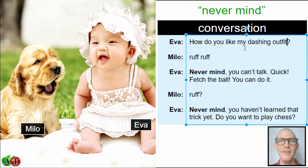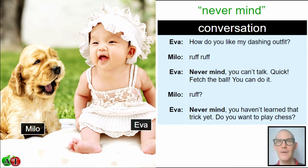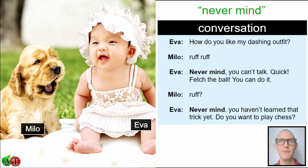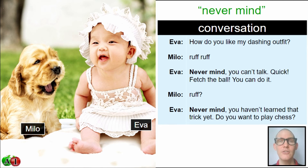A 'dashing' outfit means exciting, incredible — something that you want to look at. If it's dashing, it attracts people's attention. It's not exactly like 'ostentatious,' where you just want to show off. Dashing is similar — it means extravagant, wanting to show everybody what you can do. Eva has a dashing outfit — it's an interesting outfit that attracts your attention and is really cute.